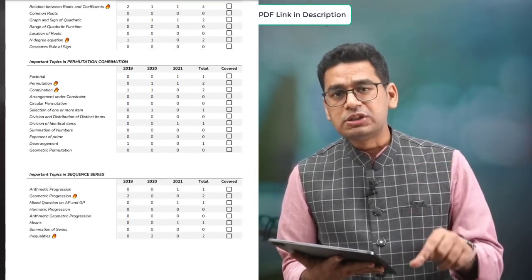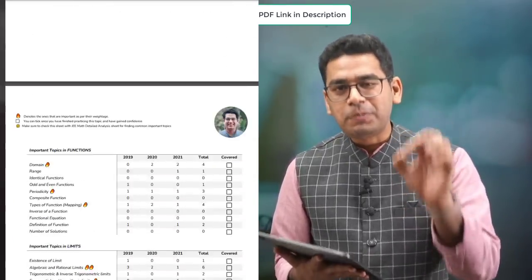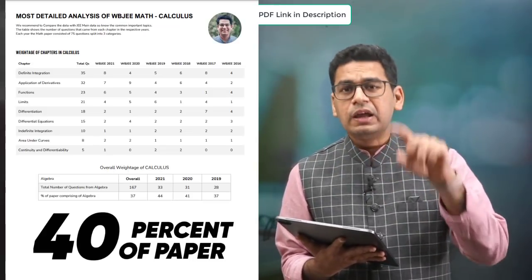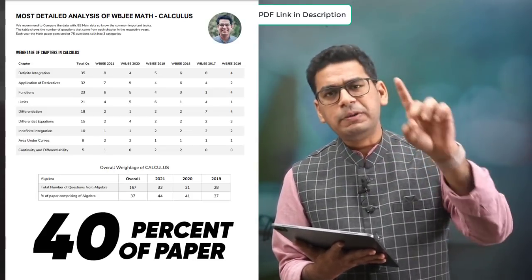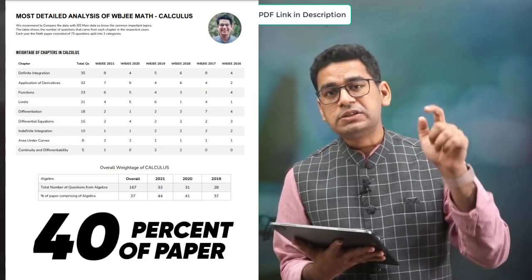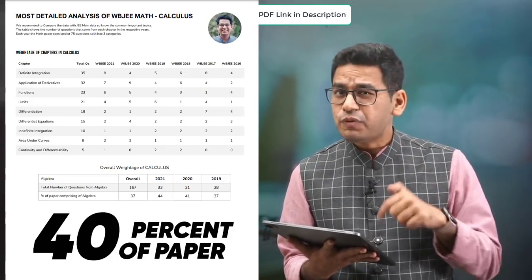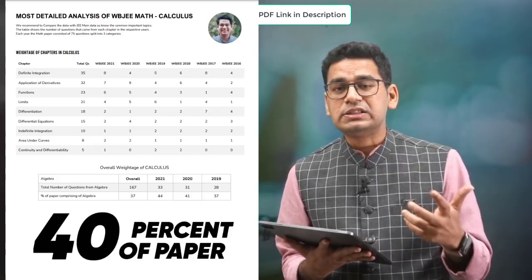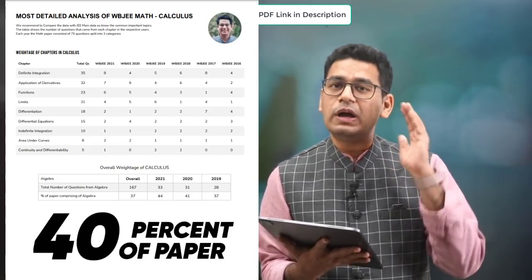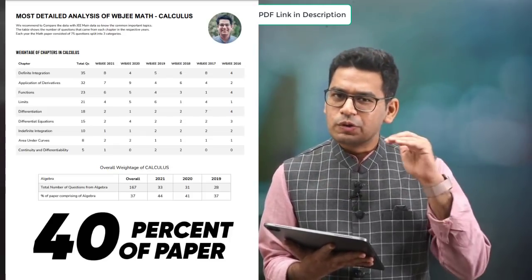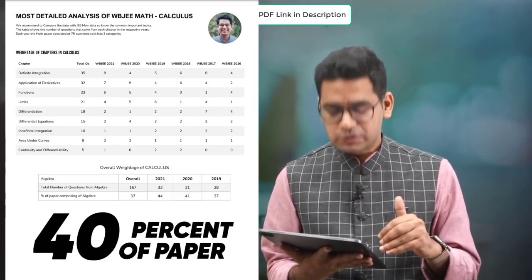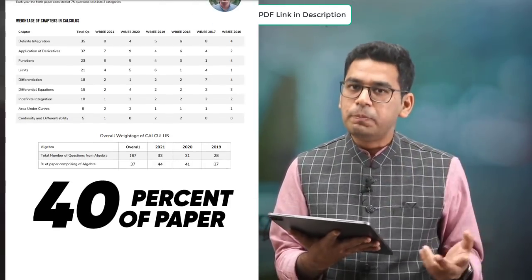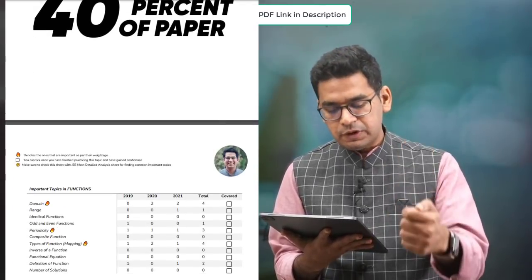Now come back to the calculus part. If you see the calculus part, 40% of the paper comprises calculus — again, a stark difference from JE Mains. In JE Mains, calculus was around 30-35%, but here it is 40%. So if you are really good at calculus, that is why we always say: read calculus, calculus, calculus — it is all in the paper. The two biggest chapters are definite integration and application of derivatives (AOD).